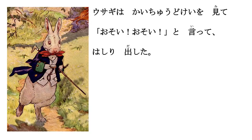Usagi wa kaichu dokei wo mite. Kaichu dokei is an example of something we'll see a lot: in Japanese we can modify one noun with another by marking the first one with no or na. But when we're forming a new compound noun, we can simply push them together without any modification. Kaichu means in one's pocket, and tokei means clock or watch, so kaichu dokei is a pocket watch.